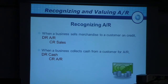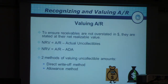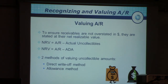How do you value AR on the balance sheet? We use a term called NRV, which stands for Net Realizable Value, because we know that not everyone is going to pay. If you have a thousand customers, maybe three people will not pay — not because they don't want to, but because of financial difficulties, bankruptcy, or other life events that either delay or prevent payment. So NRV, Net Realizable Value, must be shown on the balance sheet.